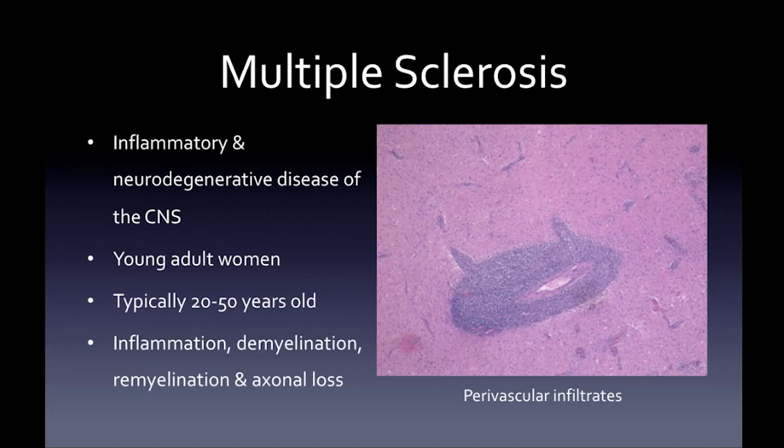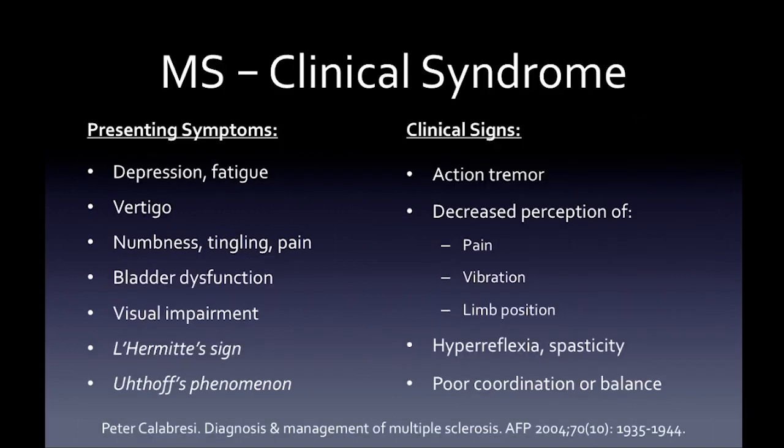Multiple sclerosis is an inflammatory and neurodegenerative disease of the CNS, usually affecting young adult women, typically 20 to 50 years old. It's a disease of inflammation, demyelination, remyelination, and axonal loss. On this histology slide you can see the perivascular lymphoplasmacytic infiltrates and macrophages affecting the white matter surrounding the vessel.